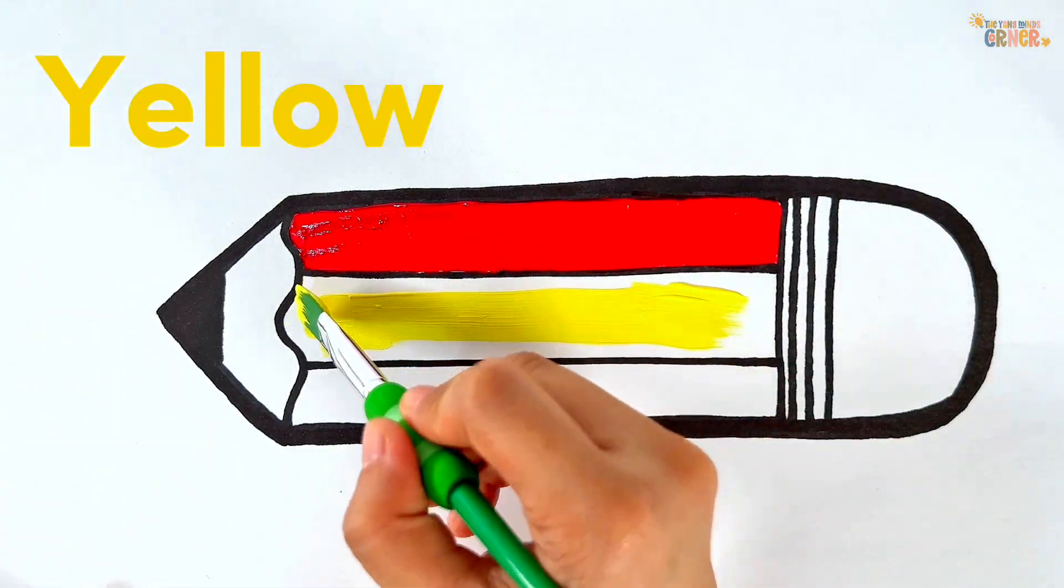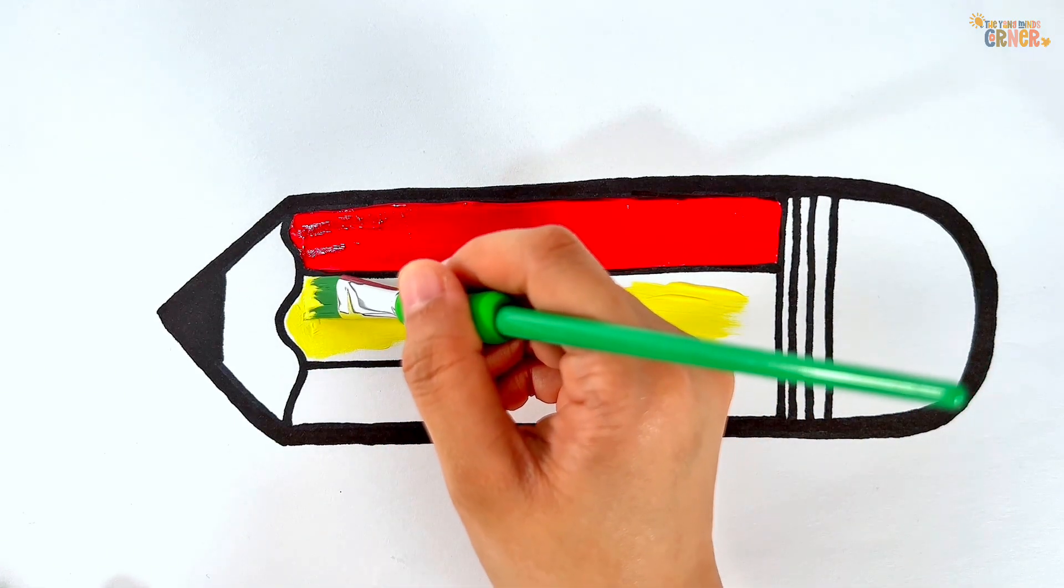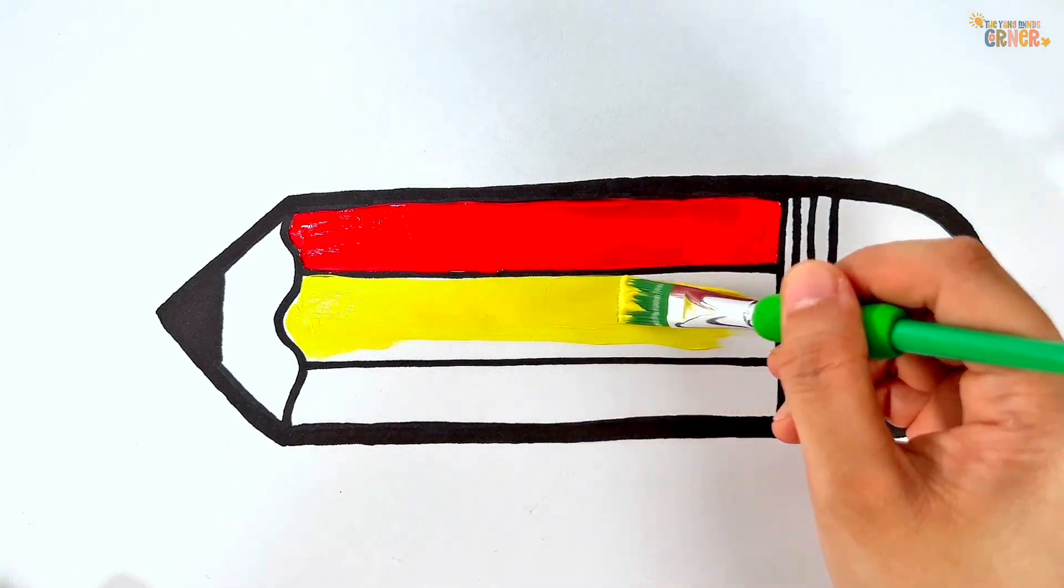Yellow. Yellow is also the color of the sun.